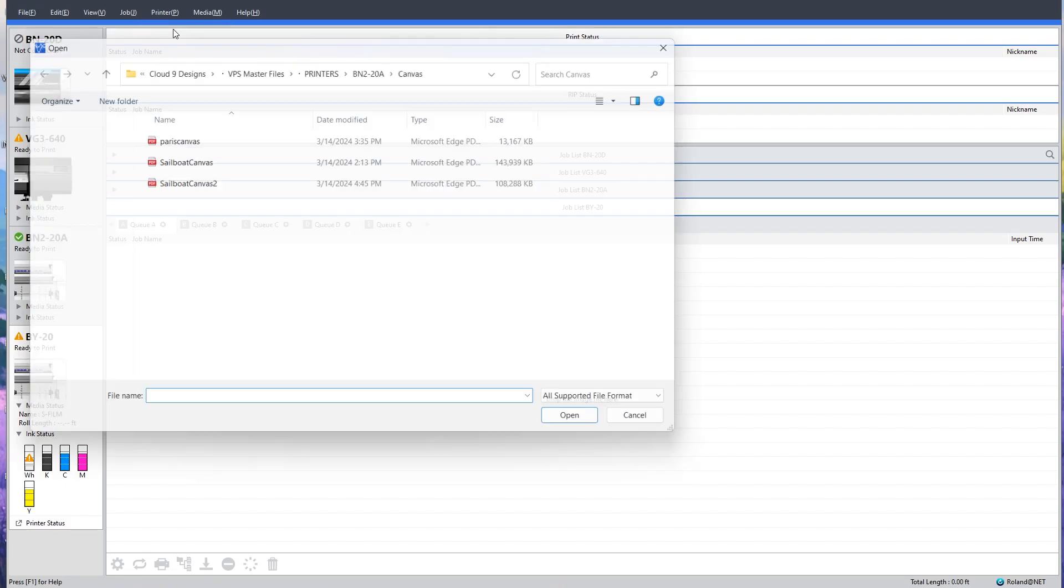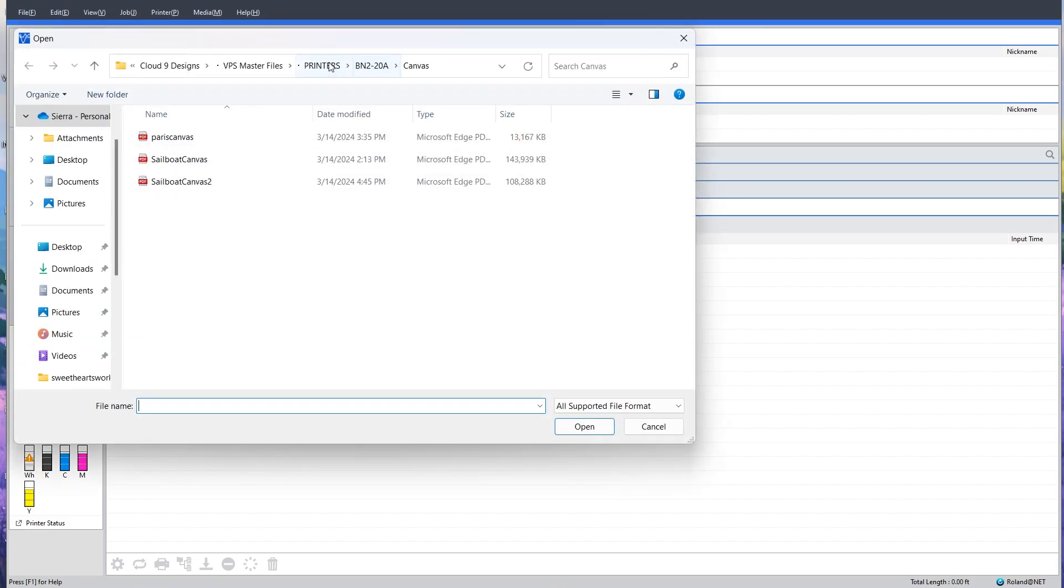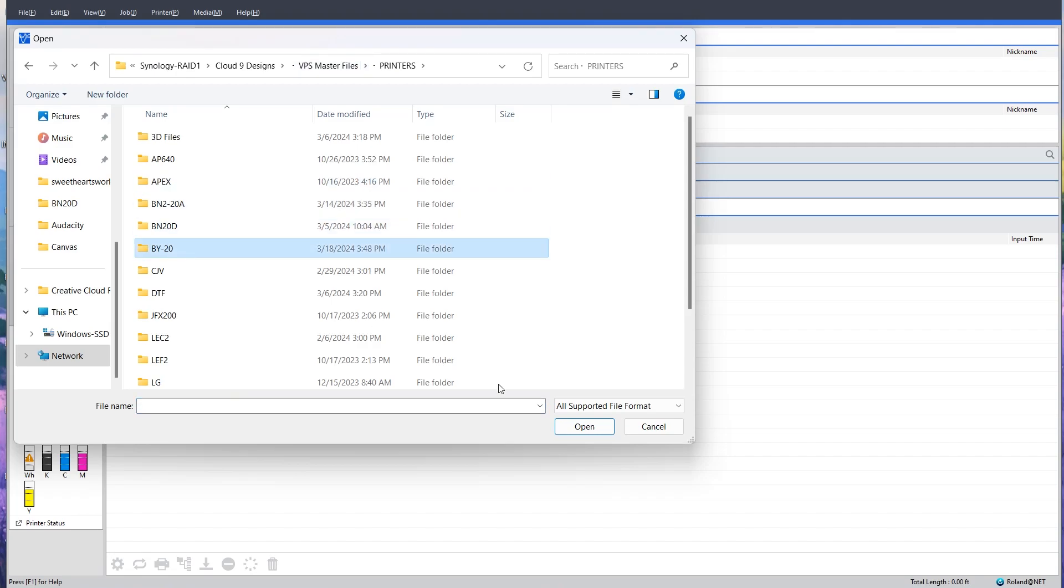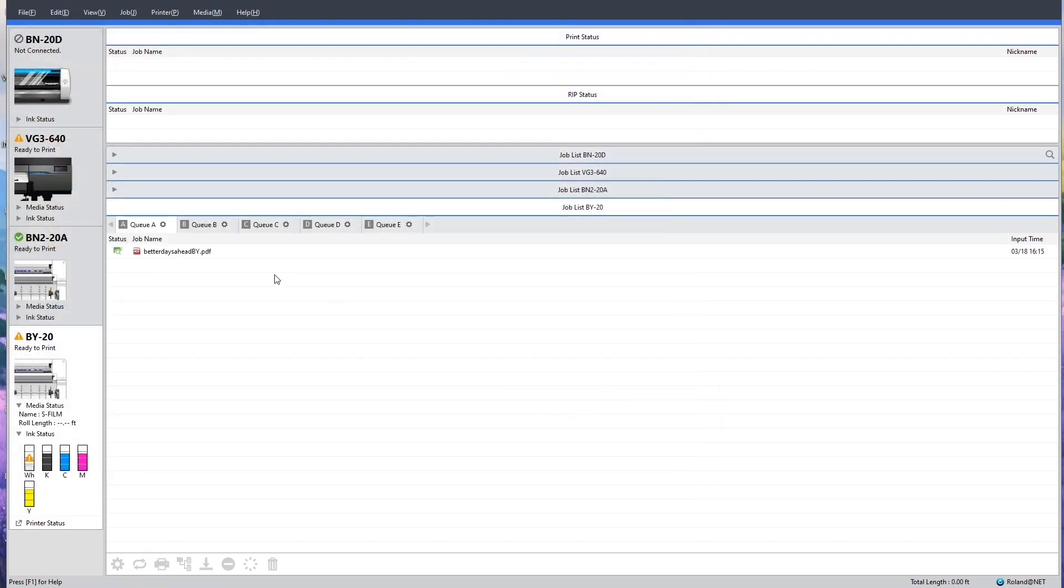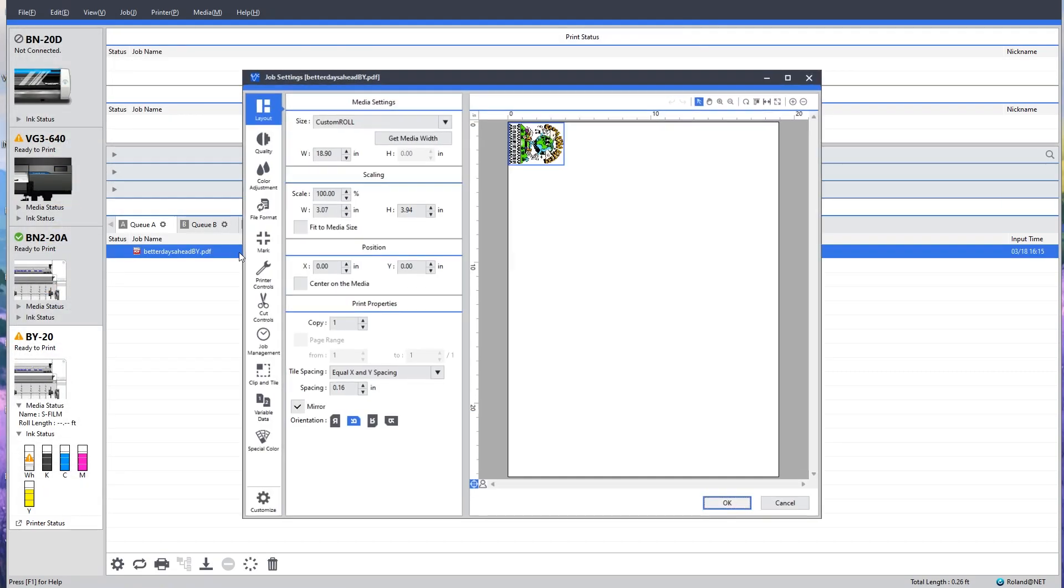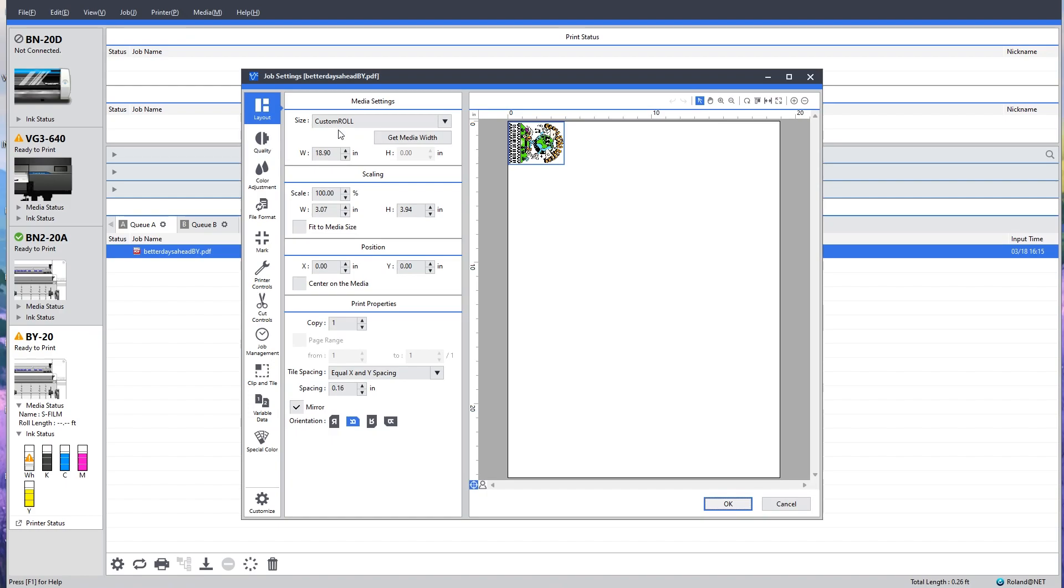I'm going to now bring in my file into QA. I'm going to navigate and find my file and bring it into QA. Now that I have my file and it's already in the queue, I can double click on it to open it up.